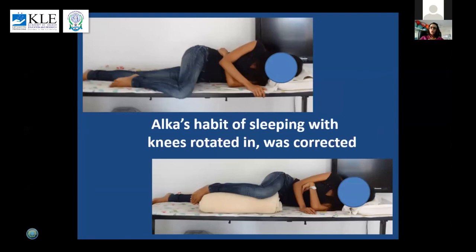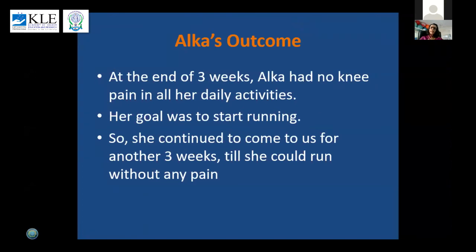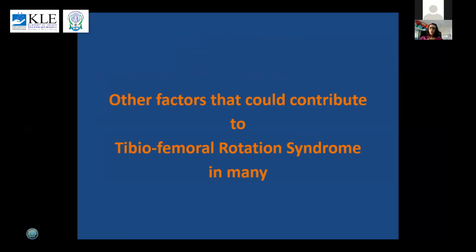It was equally important to show her correct lying positions. Her usual lying posture was attenuating all her external rotators and hip muscles. Instead, with a bolster or pillow placed under her knee so the hip and knee were parallel to the floor, she felt much better at night and when she got up in the morning. At the end of three weeks, Alka had no knee pain in all her daily activities and static positions. Her goal was to start running, so she continued for another three weeks until she could run without any pain.